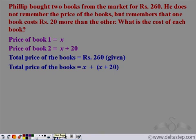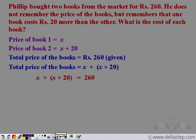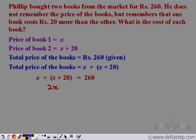The expression x plus (x plus 20) and the value 260 both represent the total price of the books, so we equate these two and form an equation. This is a linear equation in one variable, and we have already learned how to solve a linear equation in one variable. So we can solve it and find the value of x.